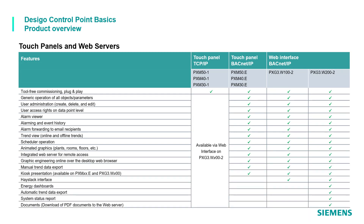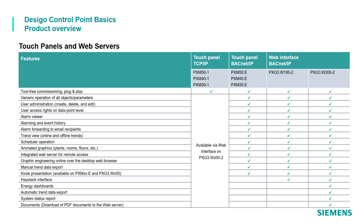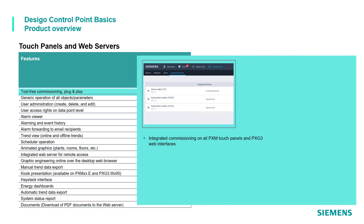Touch panel clients — without the web server functionality — offer only the so-called tool-free commissioning, plug and play. All other features can be fulfilled by a flanked PXG3 web server device, and only the W200 model supports advanced operation.